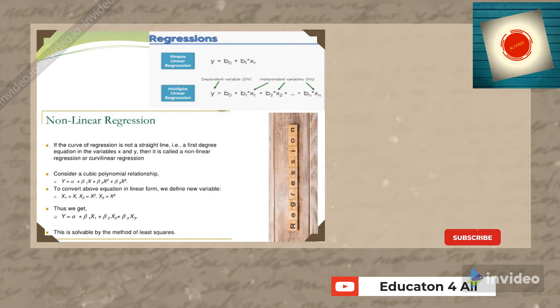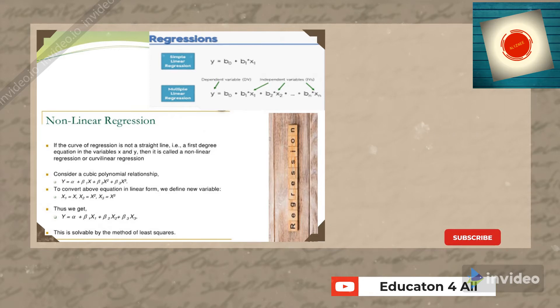Defining variables this way, the equation becomes y = α + β1x1 + β2x2 + β3x3. When we have the parameter values available, we can calculate the dependent variable. This is solvable by the method of least squares.